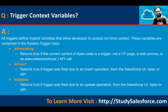Trigger context variables are important. All triggers define implicit variables that allow developers to access runtime context. These variables are contained in the System.Trigger class. 'isExecuting' returns true if the current context is a trigger, not a Visualforce page, web service, or Execute Anonymous API call. 'isInsert' returns true if the trigger was fired due to an insert operation from the Salesforce UI, Apex, or API.